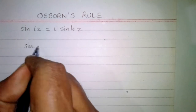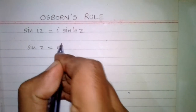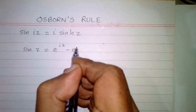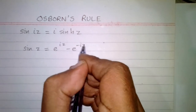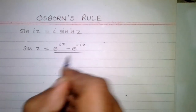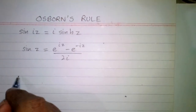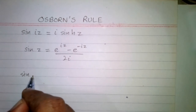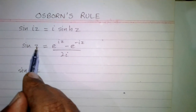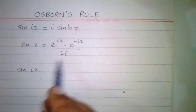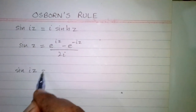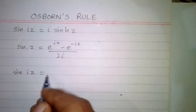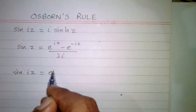First of all, we know that sine of z is equal to e to the power iota z minus e to the power minus iota z, upon two iota. Now we will put iota z in place of z, so we substitute iota z for z in this formula.